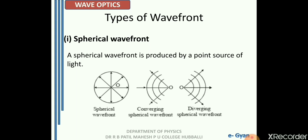From a point source, the rays emerge outwards. If I join all the particles which are in the same phase, I get a circle in two-dimensional whereas it is a sphere in three-dimensional. The spherical wave front can be converging as well as diverging. The wave front we saw was a diverging wave front because the spherical surfaces emerged outwards. There may also be a case where the spherical surfaces move inward — that is called a converging spherical wave front.